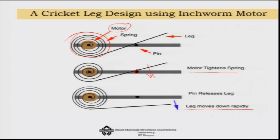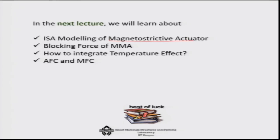In summary, once electric actuation is developed through the uniform strain model, deflection can be amplified using three approaches: internally leveraged systems such as rainbow configurations, externally leveraged systems such as unimorphs, bimorphs, and amplified piezo actuators, or frequency leveraged systems and mechanisms such as cricket leg designs. In the next lecture, we will discuss the magnetostrictive actuator, blocking force, how to integrate temperature effects, and two interesting applications — active fiber composites and macro fiber composites.